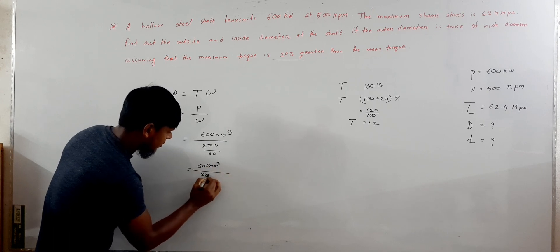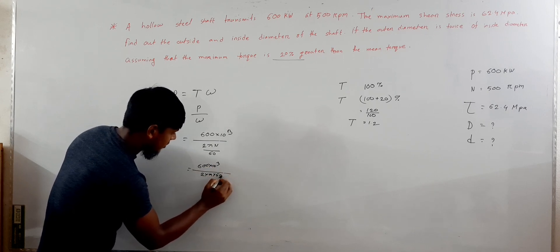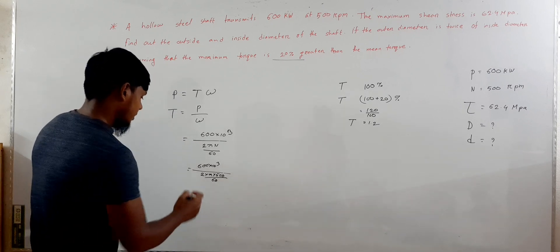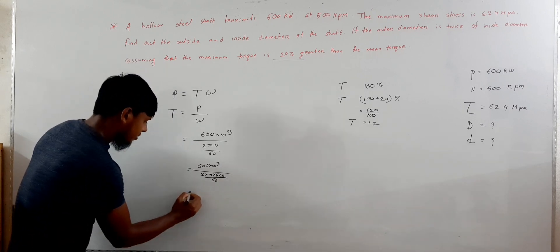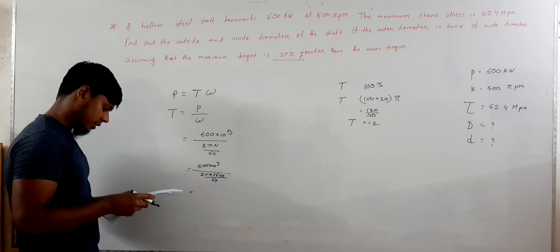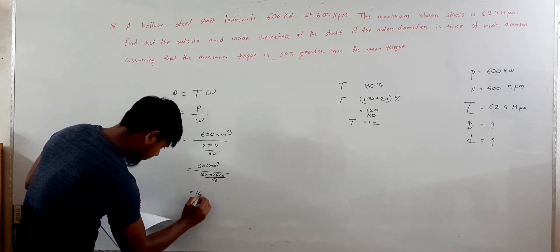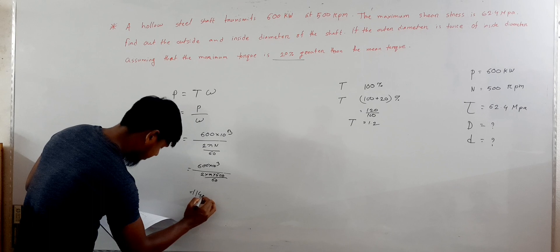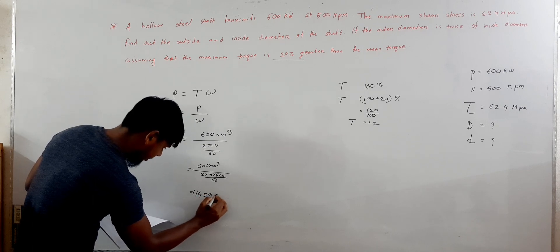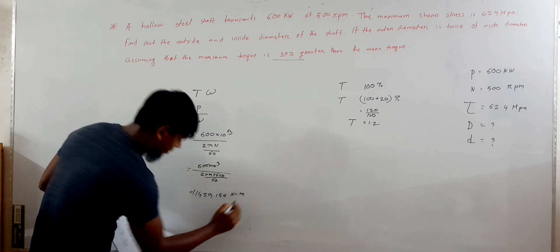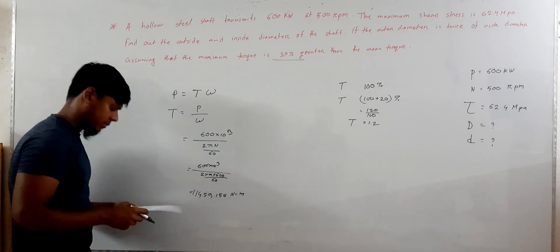Using 2 pi N divided by 60 for omega, we proceed with the calculation to find the torque in Newton-metres.